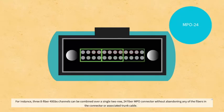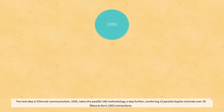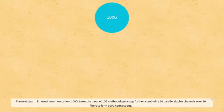For instance, three eight-fiber 40Gbps channels can be combined over a single two-row 24-fiber MPO connector without abandoning any of the fibers in the connector or associated trunk cable. The next step in Ethernet communication,